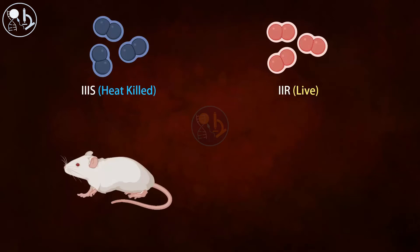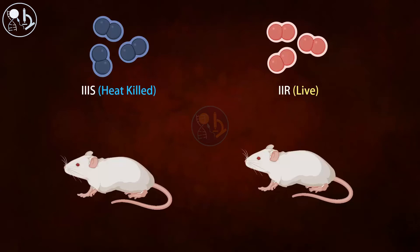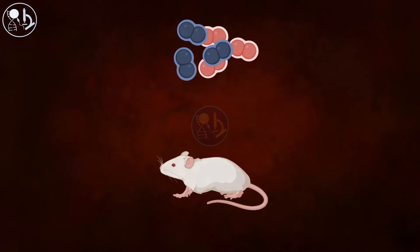Both the heat killed 3S and the live 2R were then injected separately in two groups of mice. The mice did not get killed in either of these two cases.